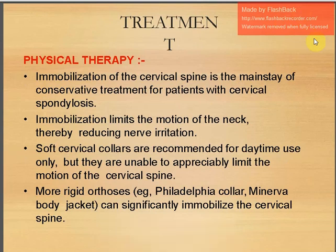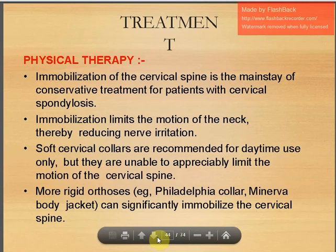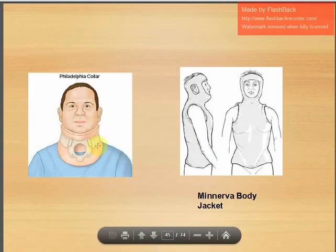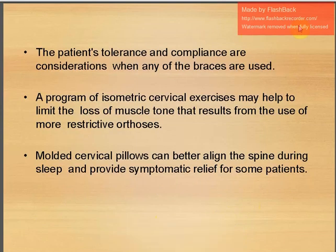Physical therapy plays an important role in treatment. Immobilization of the cervical spine is the mainstay of conservative treatment. It limits neck motion, reducing nerve irritation. Soft cervical collars are recommended for daytime use only but cannot appreciably limit motion; more rigid options include the Philadelphia collar and the Minerva body jacket, which can significantly immobilize the cervical spine. Patient tolerance and compliance must be considered. A program of isometric cervical exercises may help limit loss of muscle tone from restrictive orthoses.